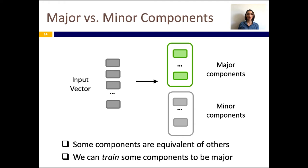In our preliminary experiments, we observed that not all the components of the input vector to the GAN have a human observable impact on the output images. We conjecture that some components have a major impact on generated images, and we call them major components, while others have an indistinguishable impact on generated images, and we call them minor components. Further, we conjecture that we can train specific components to be either major or minor using similar ideas as in disentangled representation learning. Therefore, instead of disregarding minor components for keeping gaps in image generation, we use them to embed image realism features.